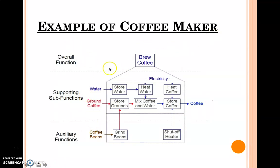This is the example of coffee maker. Overall function of this coffee maker is brew the coffee. Supporting sub-functions: what are the sub-functions in this system? Subsystems are like it used to store the water. The supply of water will be from here, and this is the whole water cycle. Heat the water, for heating the water electricity will be needed. Then heat the coffee, again electricity will be needed.